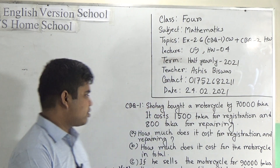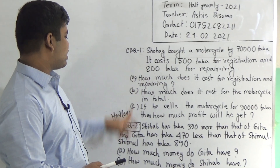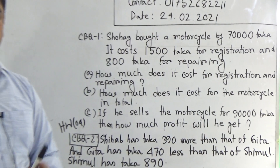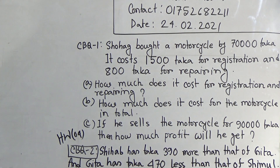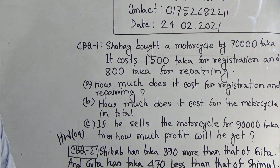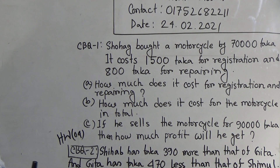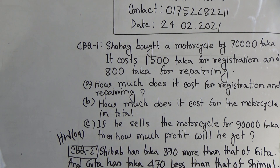Let us start our class. We have already written CBQ number 1 and CBQ number 2 on the board. CBQ number 1 will be solved in our class as CW, and CBQ number 2 will be solved by yourself in your SW copy. CBQ1 and CBQ2 are taken from the word problem of chapter 2, which has already been done in our previous classes.